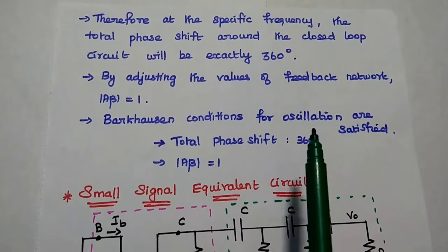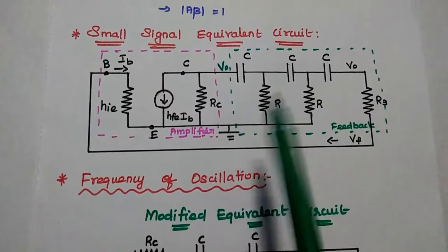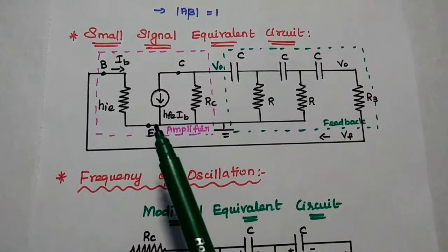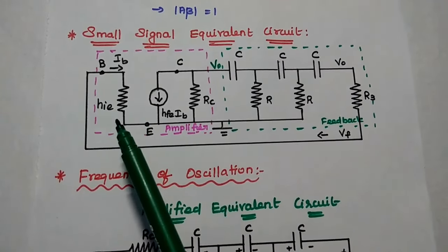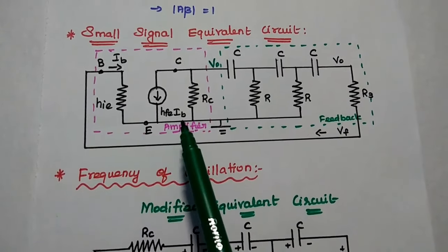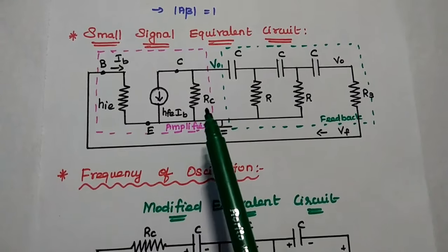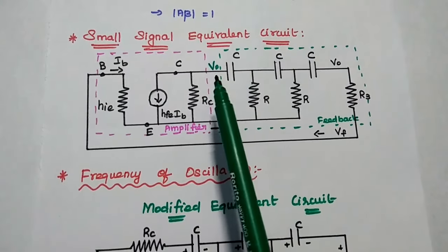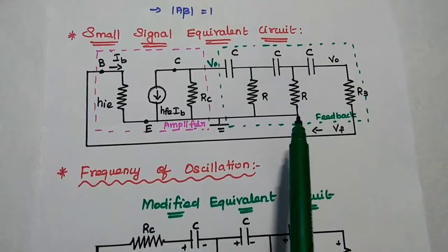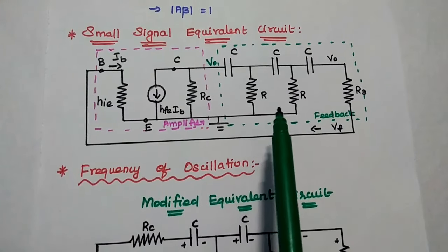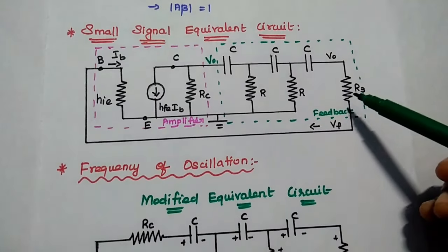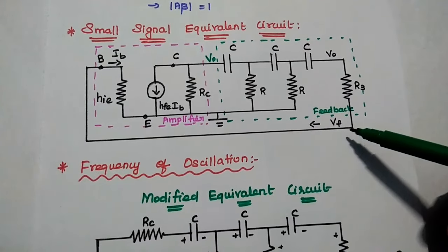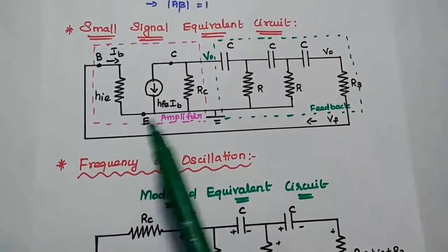So the Barkhausen criterion for oscillation is satisfied here. Next is the small signal equivalent circuit of the RC phase shift oscillator. The amplifier circuit can be represented with the input impedance H_IE, and a current source at the output H_FE·I_B in parallel with R_C (the collector resistor). The output of this amplifier is given as input to the feedback network, which consists of three sections of RC network in cascade connection. Here R3, the last resistor in the feedback network, provides the feedback signal which is given as input to the amplifier.